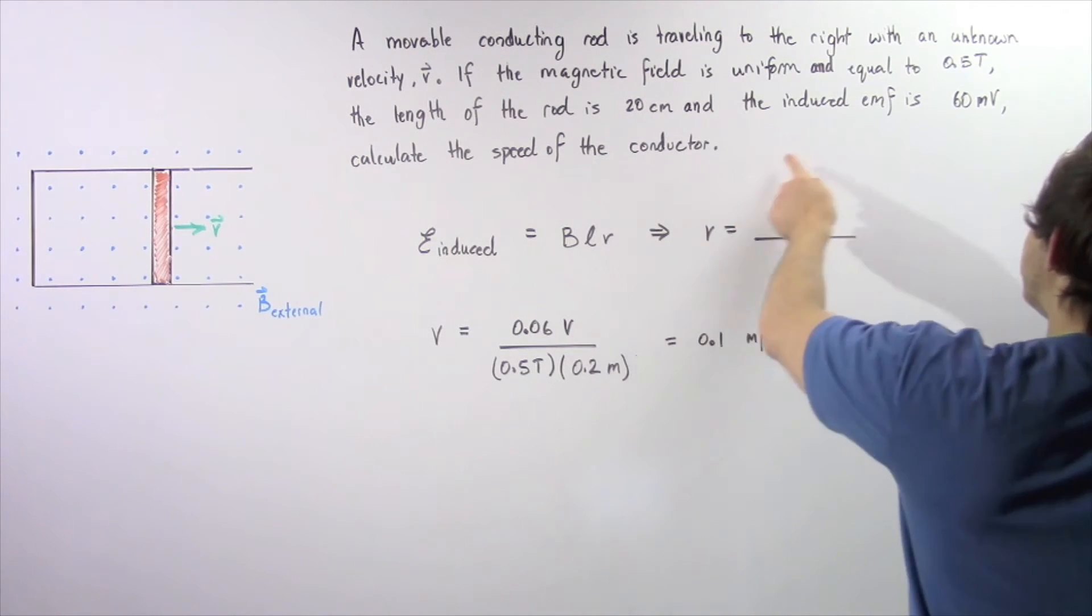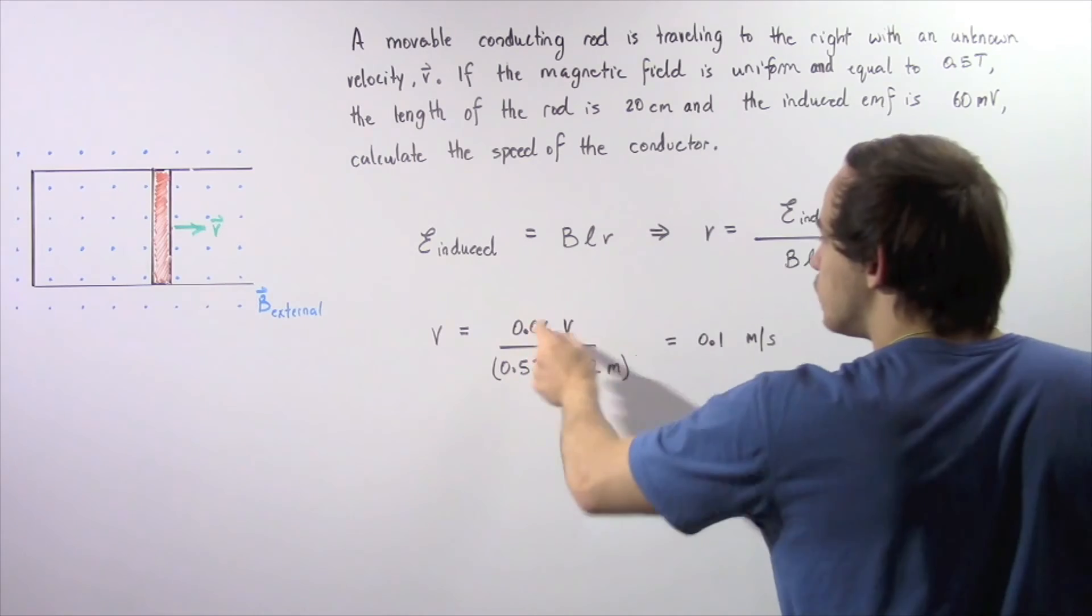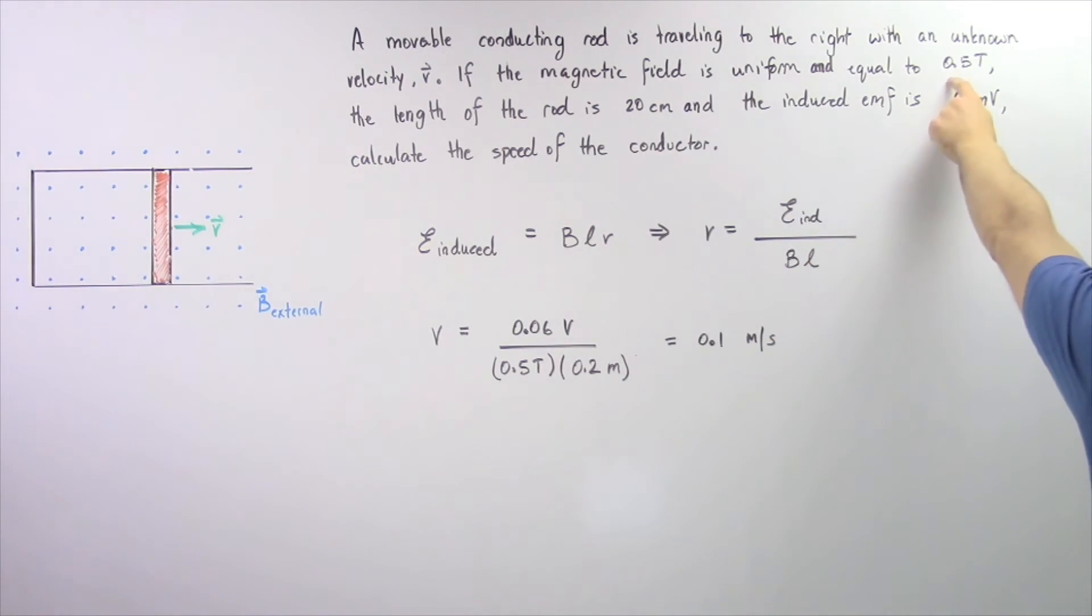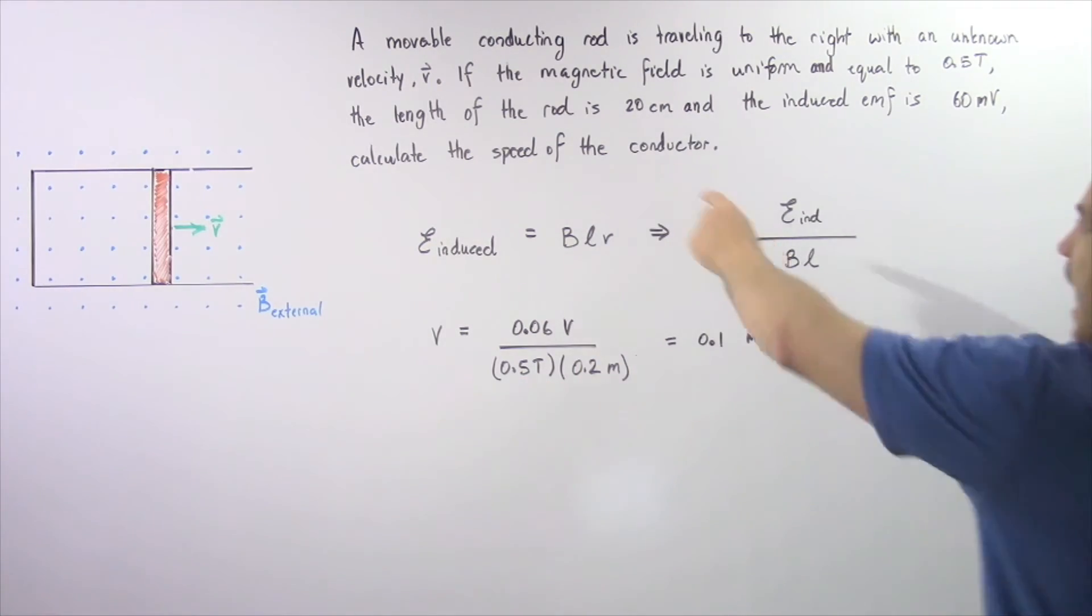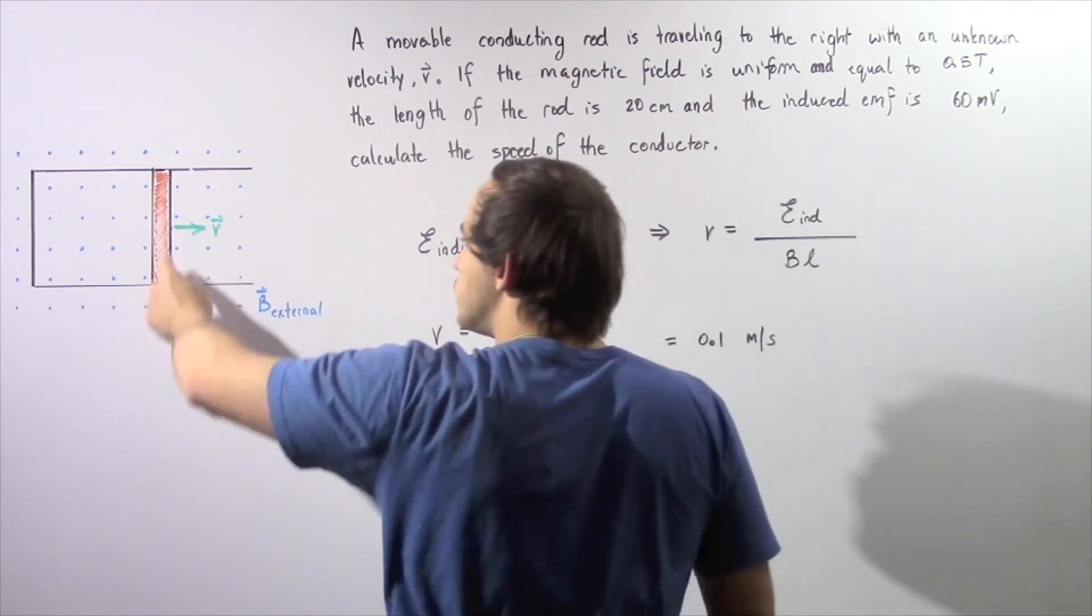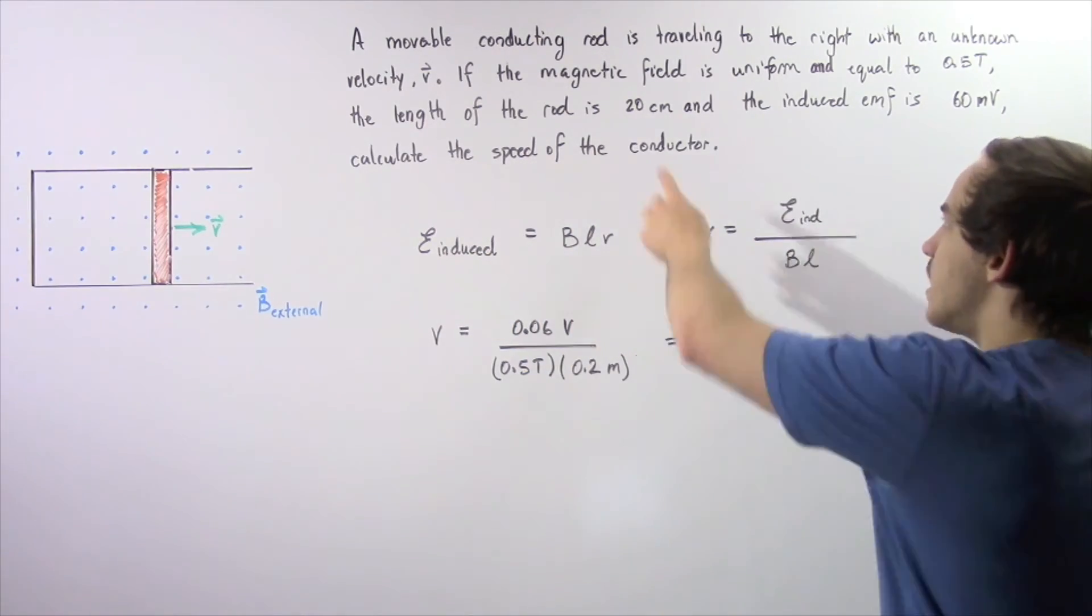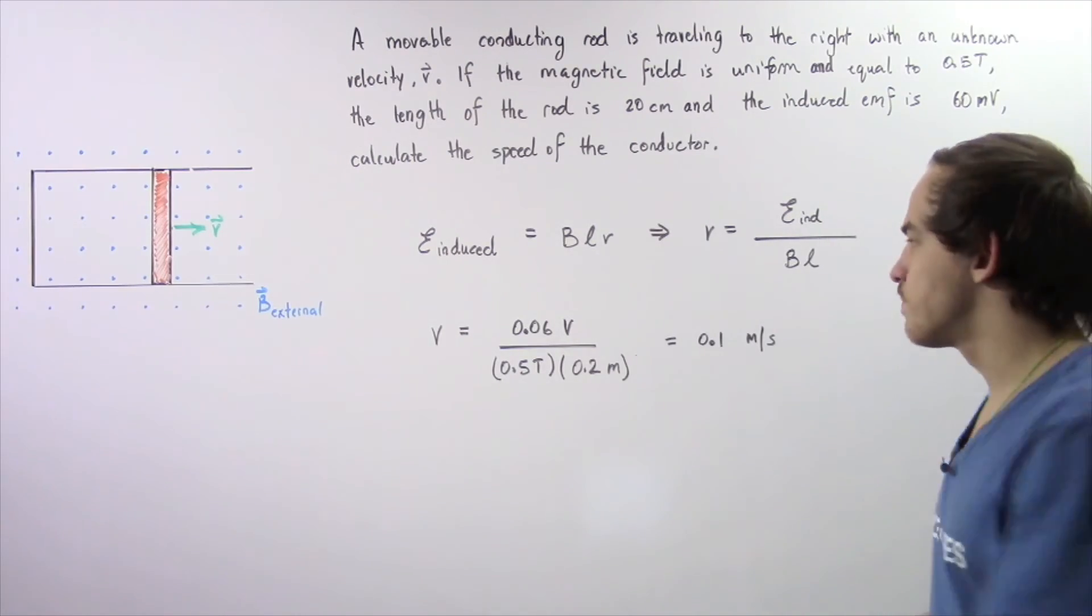Our induced voltage is 60 millivolts, so we convert that into volts and divide by 1000 to get 0.06 volts. The magnitude of our magnetic field is 0.5 teslas, and our length of the rod is 20 centimeters, so we convert that to meters by dividing by 100 and get 0.2 meters.